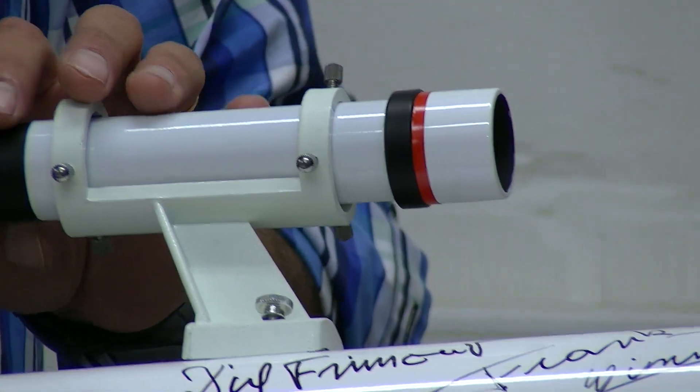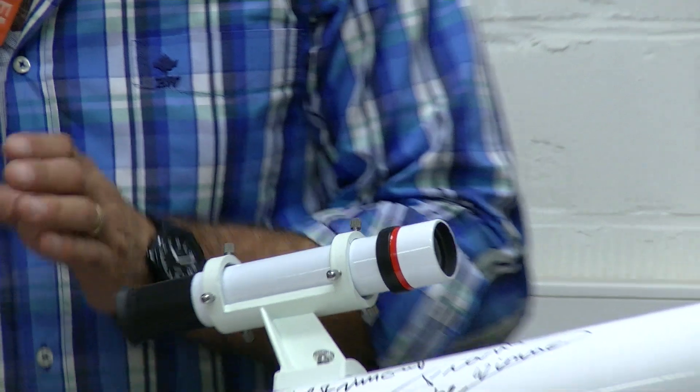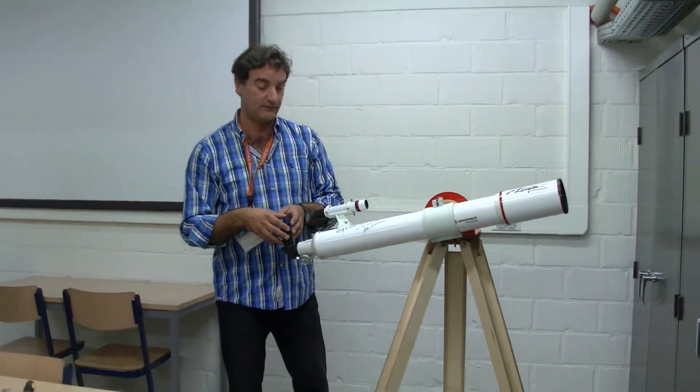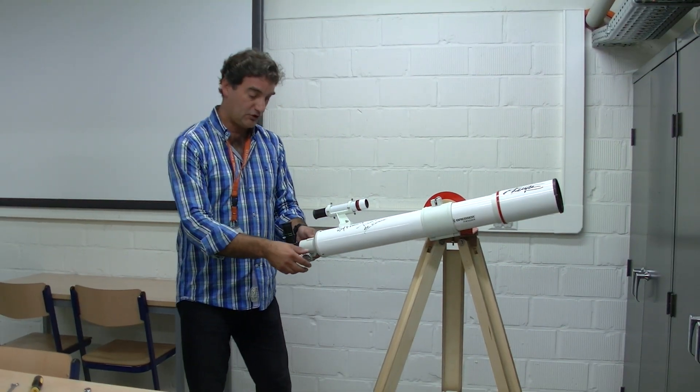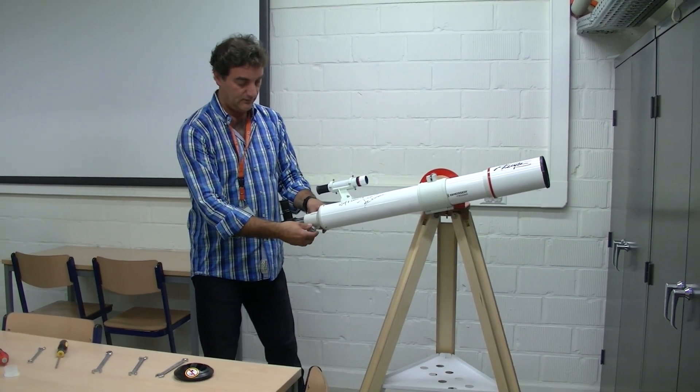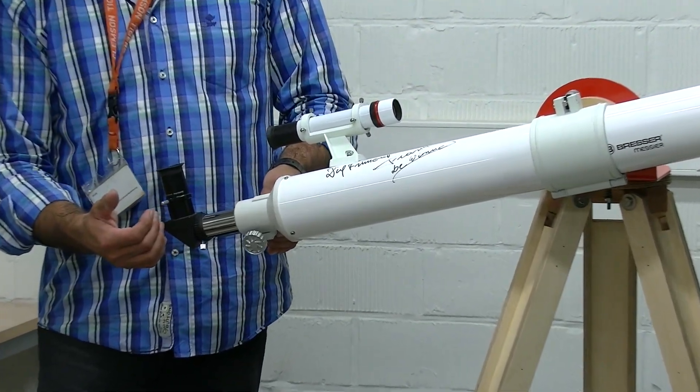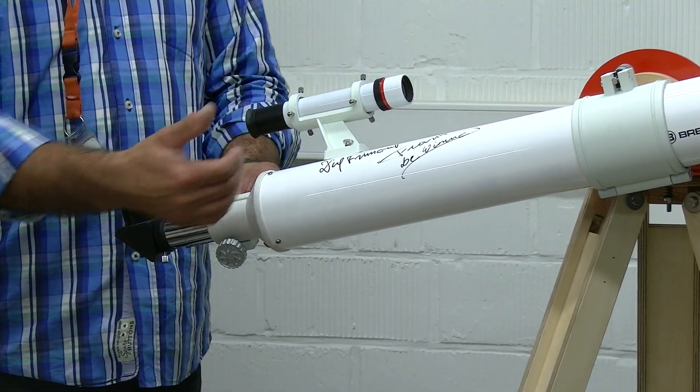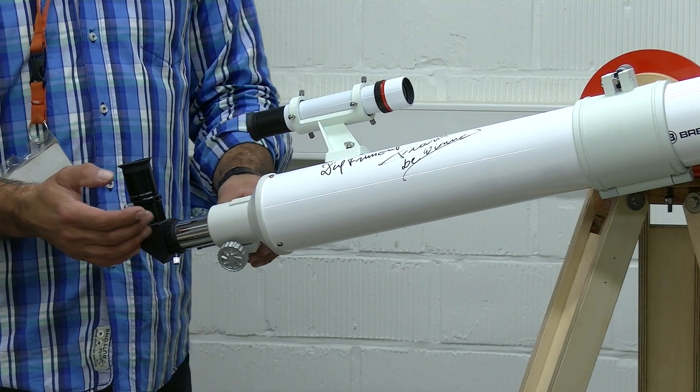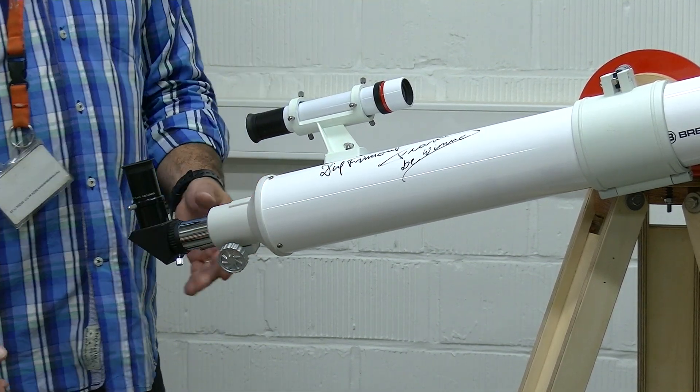This way, if you try to find a new object, you first look through the finderscope, and then the object will be in your telescope as well. If the image is not sharp, you can always, this is the focusing. If you move the tube out, it is for objects closer to you. If you move the tube in, you will focus on objects which are further away from you. This is the focusing.